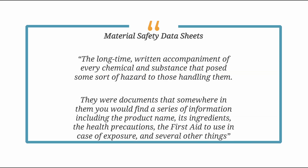How many of you have heard of material safety data sheets, otherwise known as MSDS sheets? Material safety data sheets were the long-time written accompaniment of every chemical and substance that posed some sort of hazard to those handling them. Somewhere in these documents you would find the product name, its ingredients, the health precautions, first aid to use in case of exposure, and several other things. The issue was that there was no real structure to these documents — this information just had to be found somewhere in the document, and each supplier could choose where they put it. So their purpose of informing, and oftentimes quickly informing, those exposed fell far short because of this lack of structure.